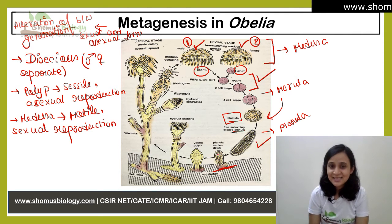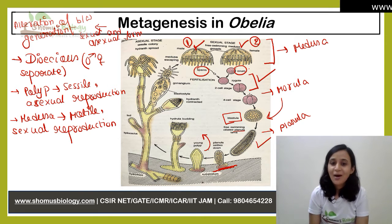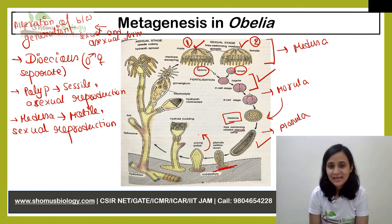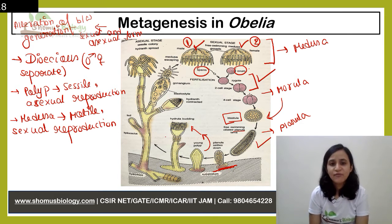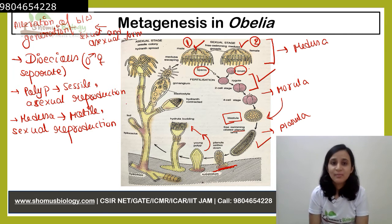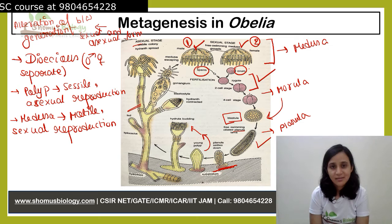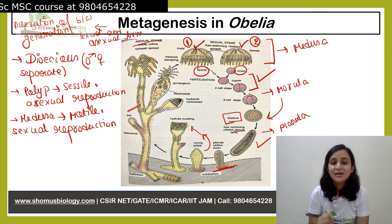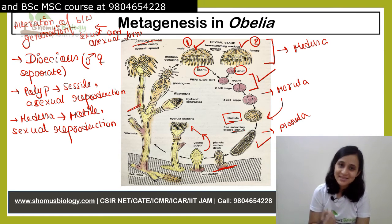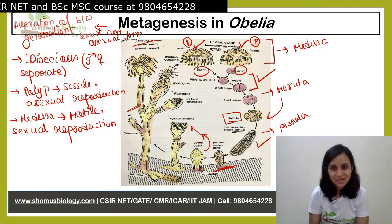Once the planula settles, it forms a young polyp. The larva develops into a young polyp, which then generates buds through budding, and from those buds the adult organism is produced. This adult polyp is the asexual form and it is sessile — fixed to the substratum, unable to move.